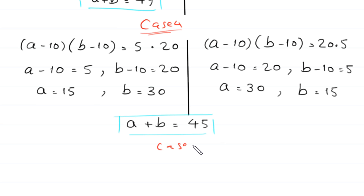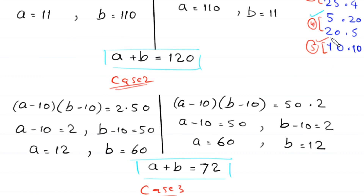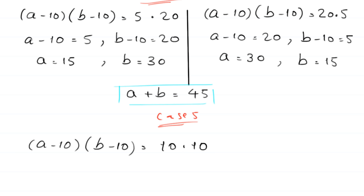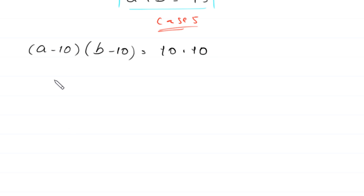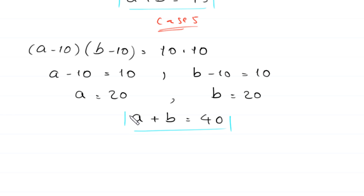Case 5 uses the factor pair 10 times 10. We write (a minus 10)(b minus 10) equals 10 times 10. So a minus 10 equals 10 and b minus 10 equals 10, giving a equals 20 and b equals 20. Therefore a plus b equals 40. This is the fifth solution.